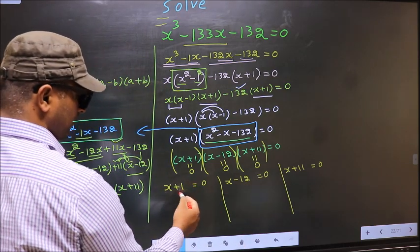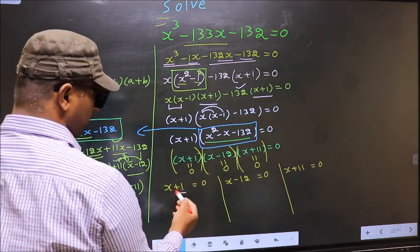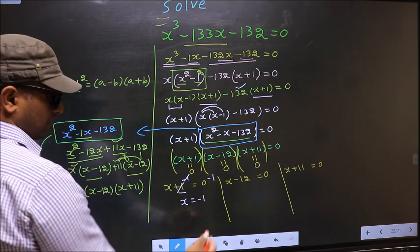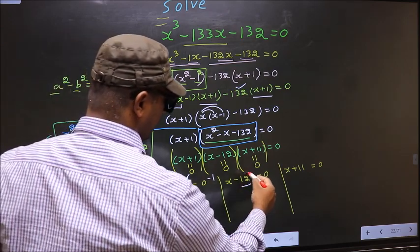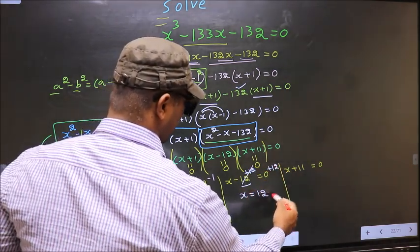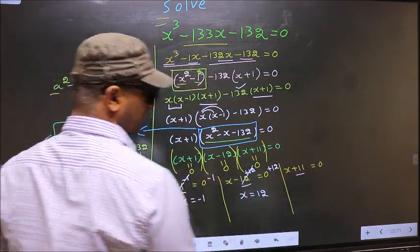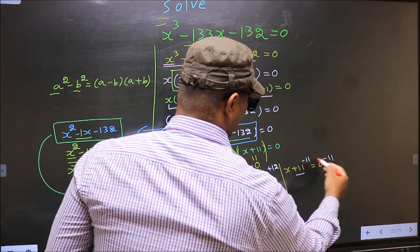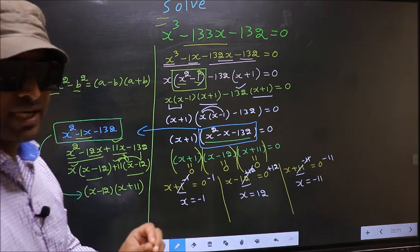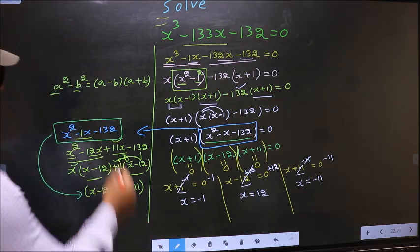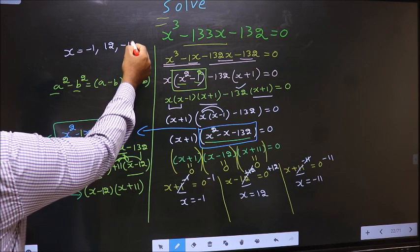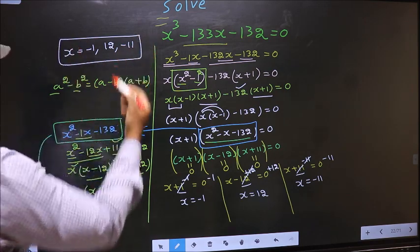To get x from x plus 1 equal to 0, subtract 1: x equals minus 1. From x minus 12 equal to 0, add 12: x equals 12. From x plus 11 equal to 0, subtract 11: x equals minus 11. So the values of x are minus 1, 12, and minus 11. This is our answer.